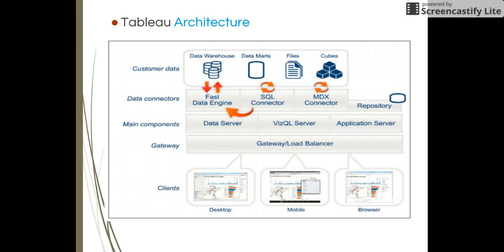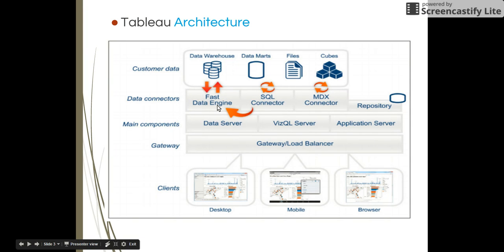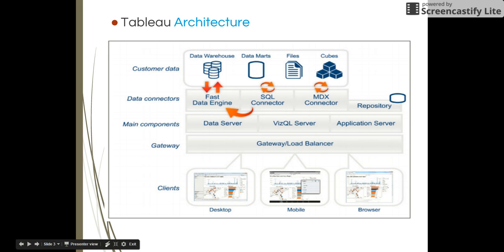The internal architecture of Tableau consists of four layers. The first is customer data — the place where you have your data, like a data warehouse. You can use files, you can use cubes. Then there are data connectors like the fast data engine, a SQL connector, or an MDX connector.